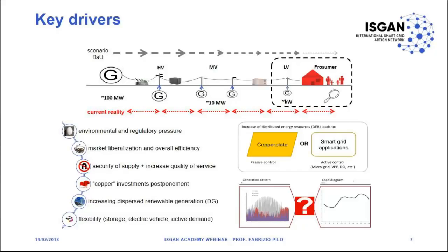We have a lot of dispersed renewable generation in many countries. Just to give you an example: in Italy we have almost 20 gigawatts of dispersed generation installed and connected to our distribution systems, and one third of energy is now produced with renewable generation. Finally, in order to manage this huge amount of new generation we need much more flexibility in the system. Flexibility is a key driver, and we can use storage, electric vehicles, and so on.